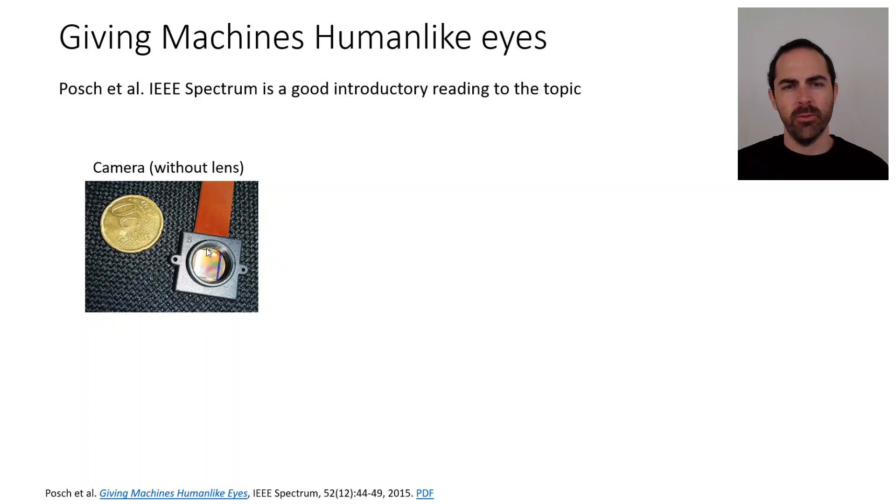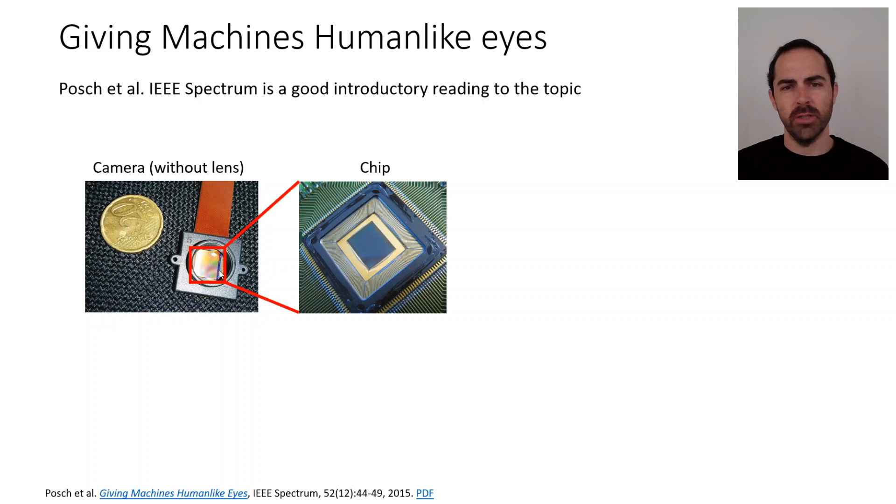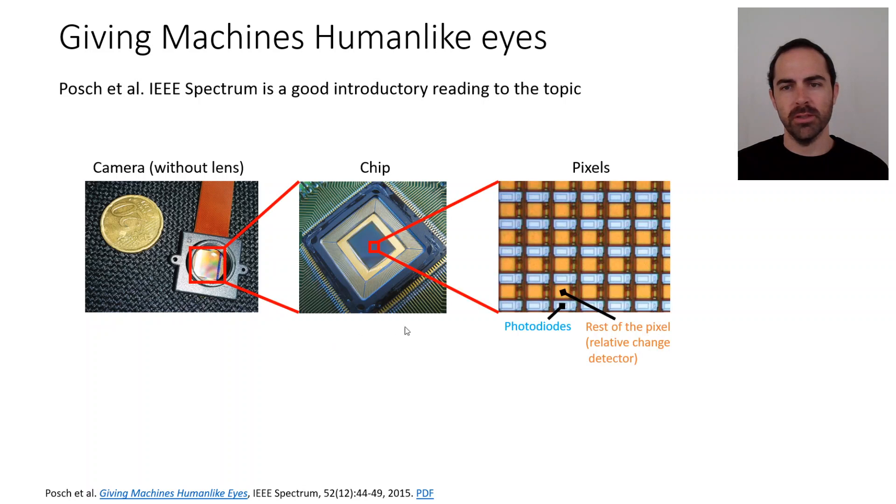If we remember where we are, we have a camera. The camera, we zoom in, has a chip. The chip has some pixels, and each pixel has a photodiode that converts light into voltage, and then the rest of the pixel contains some circuitry that is in charge of detecting relative intensity changes.